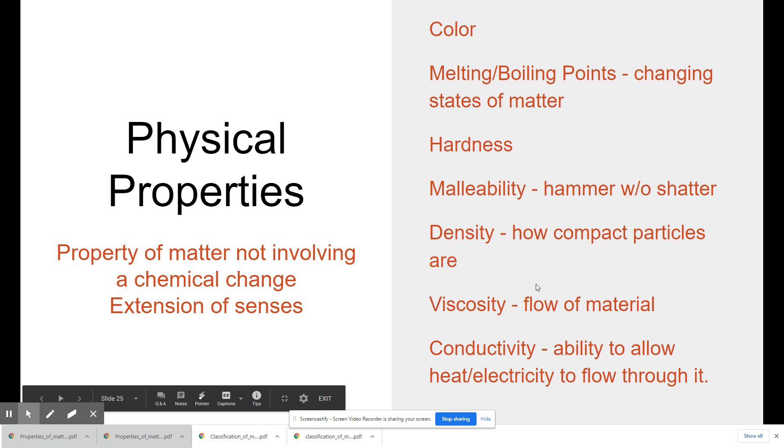So these are all examples of physical properties describing the properties of matter. So you can classify matter based on their physical properties. And we'll talk about that a little bit with like the periodic table. How that gets classified with physical, but also chemical properties as well. So we'll talk about this a little bit more in the next unit. How the periodic table is organized based on physical and chemical properties.